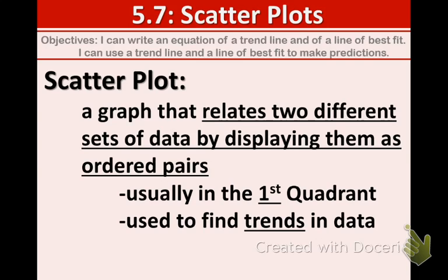So first let's define what a scatter plot is. It is a graph that relates two different sets of data by displaying them as ordered pairs. So two different sets of data and we're going to look at ordered pairs and how they're related to each other. This is usually located in the first quadrant, which means the x and y values are both positive, and we use a scatter plot to find trends or patterns in data.